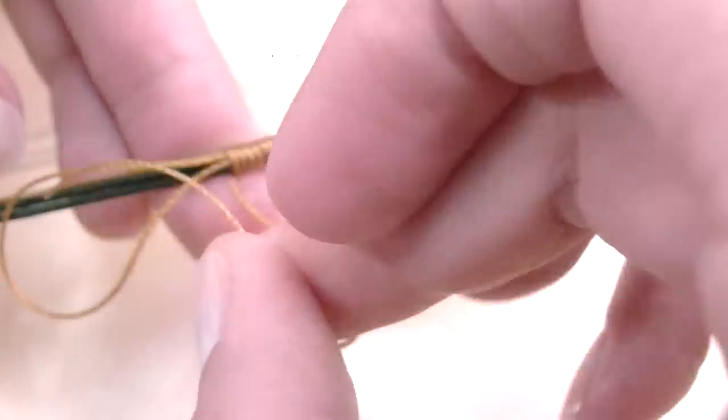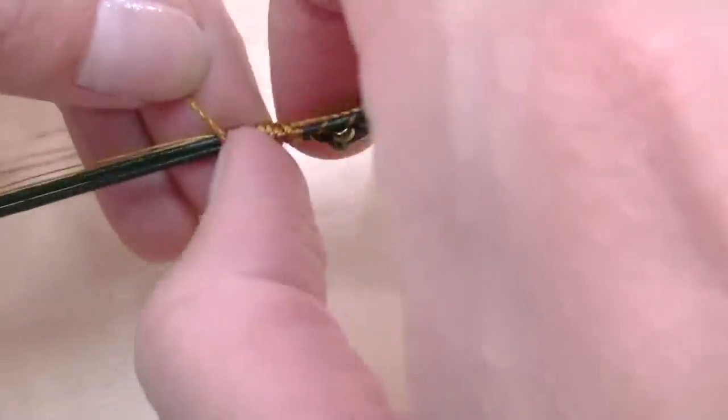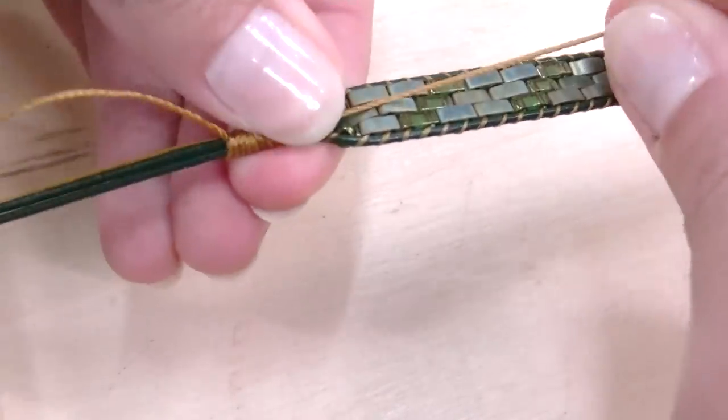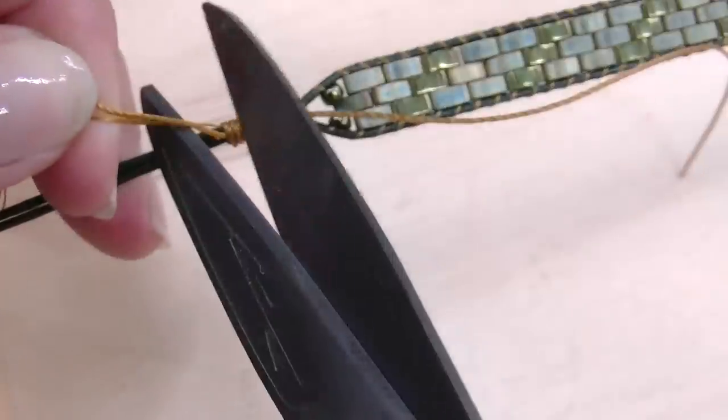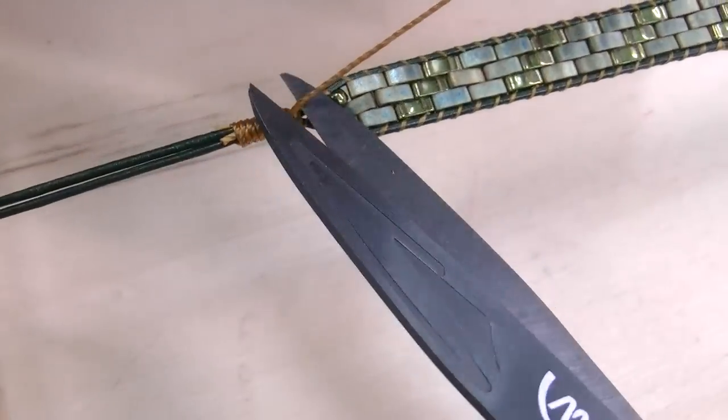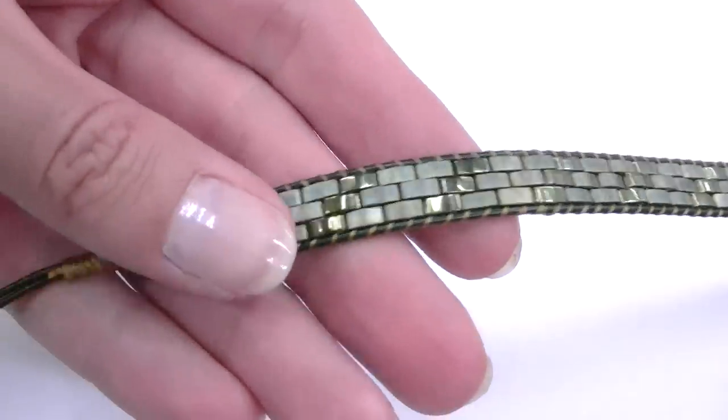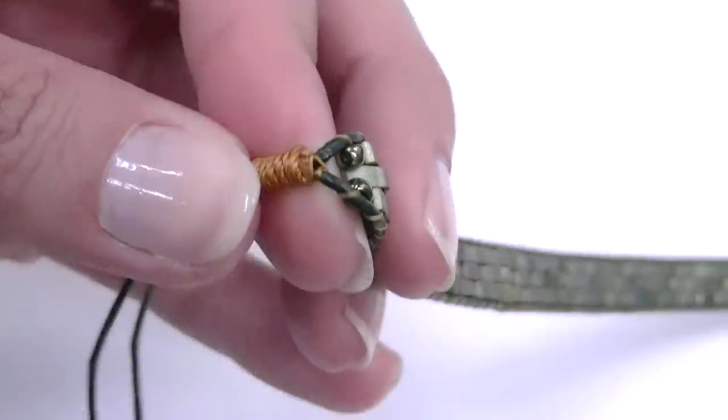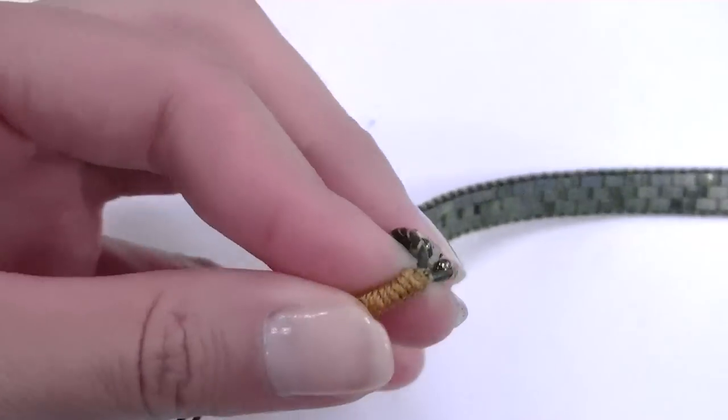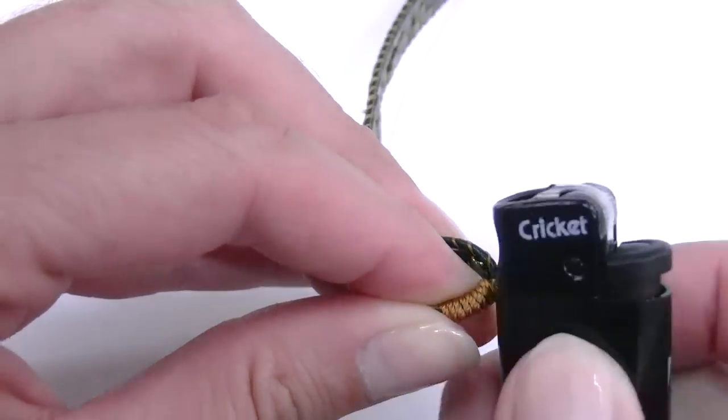Now let's pass the tip inside the loop and tense it. You can also melt the extremities with a lighter in order to avoid undoing the knot.